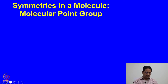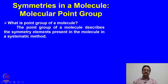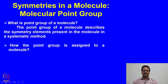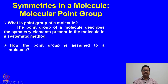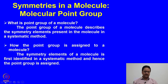The point group of a molecule represents all the symmetry elements that are present in a given molecule. The point group describes the symmetry elements present in the molecule in a systematic manner. We should identify the symmetry elements present and, based on the hierarchy of those symmetry elements, we then identify and classify molecules into different point groups. In this lecture, we will try to understand how those point groups are assigned using a given procedure. The symmetry elements of a molecule are first identified in a systematic method and then the point group is assigned.